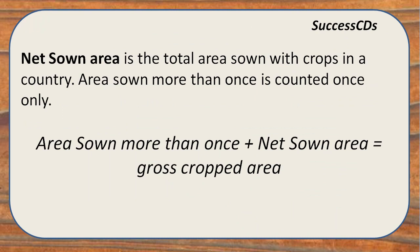The last and most important concept of land utilization is net sown area — the total land of the country on which crops are sown annually. If any land is utilized more than once for growing crops, it is considered only once. If the area sown more than once is added to the net sown area, we get the gross cropped area.